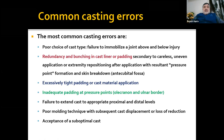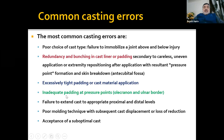The most common casting errors are: poor choice of cast type; failure to immobilize a joint above and below the injury; redundancy and bunching in the cast liner or padding due to careless uneven application or extremity repositioning after application, resulting in pressure points and skin breakdown; excessive tight padding or cast material application; inadequate padding at pressure points; failure to extend cast to appropriate proximal and distal levels; and poor molding technique with subsequent cast displacement or loss of reduction.